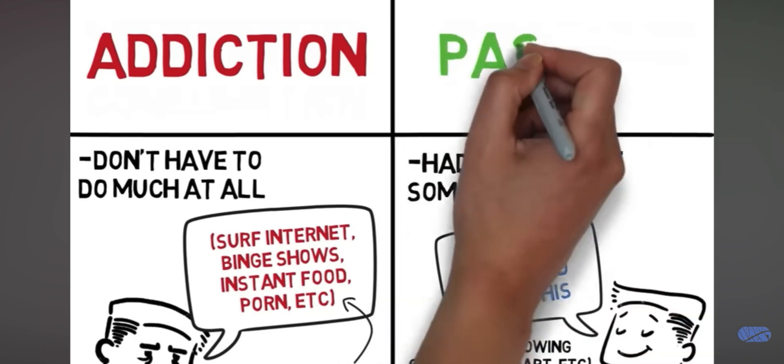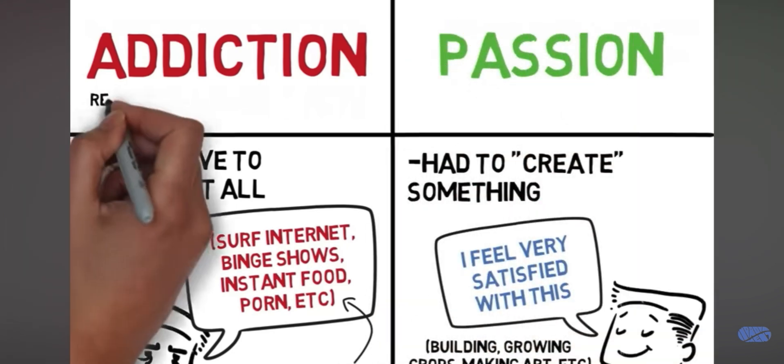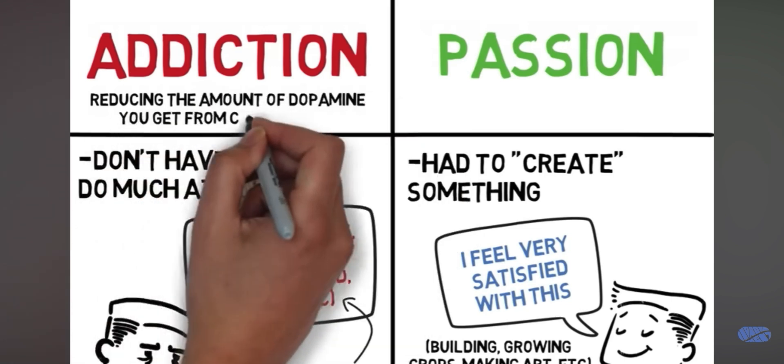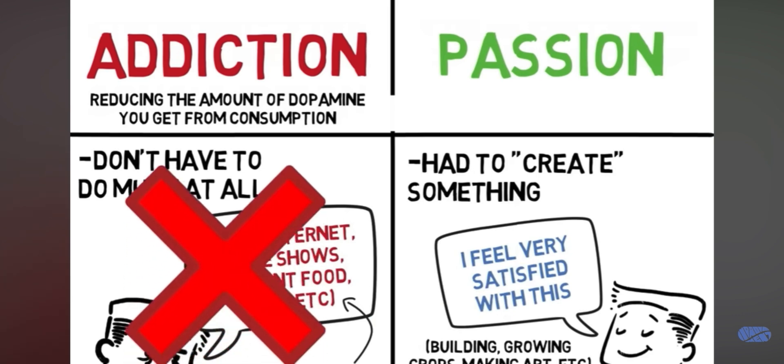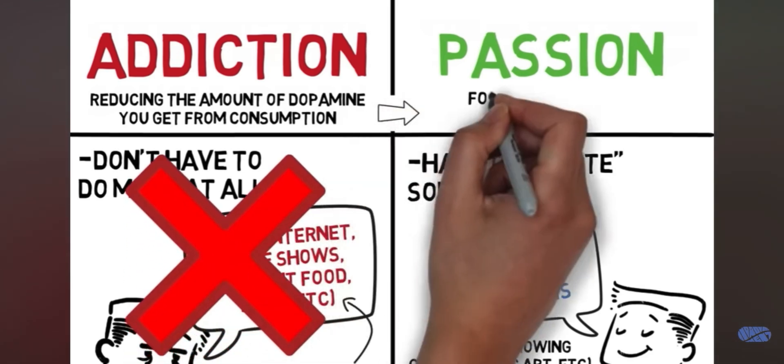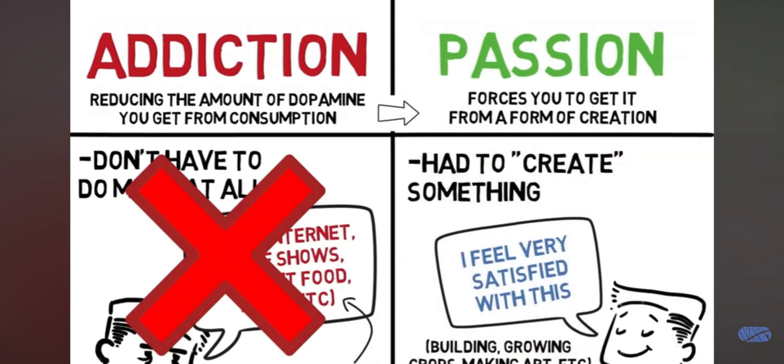You're passionate about drawing. You're passionate about dancing. You're passionate about farming. So the first and most important thing you have to do in order to find your passion is to turn back your consumption valve. Watch less TV. Play less video games. Eat less junk food. When you turn back your consumption valve, you force yourself to start looking for dopamine from forms of creation. This is crucial.